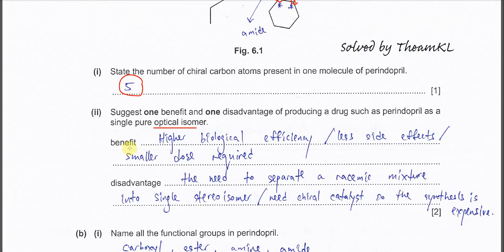The benefit is very easy — with a pure enantiomer or pure optical isomer it is more effective. It has higher biological efficiency, meaning with a smaller amount it can treat the particular disease easily. Less side effects and a smaller dose is required — for example, instead of 100 milligrams, maybe only 50 milligrams.